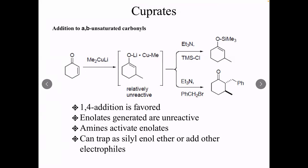The cuprate adds there, and then you can trap it as a silane to make an enolate — a silyl enol ether — or you can treat it with an electrophile like benzoyl bromide. You can treat it with that electrophile and add here.